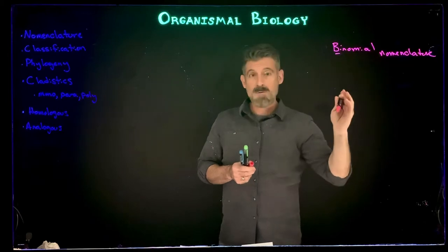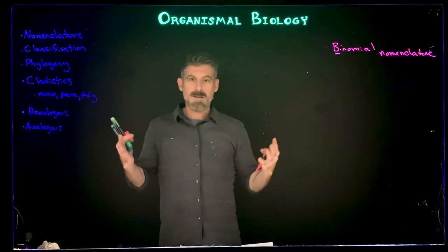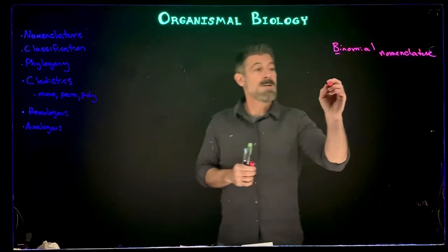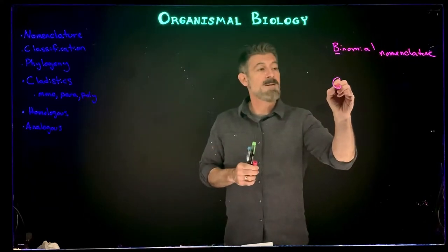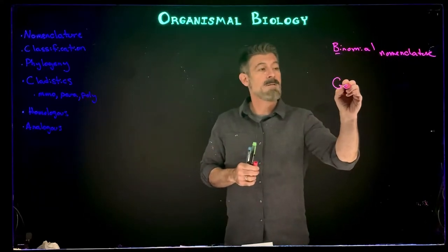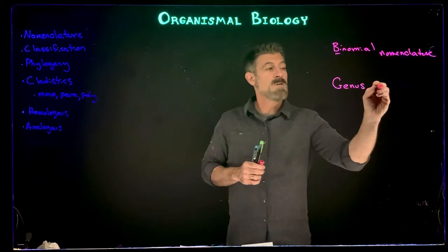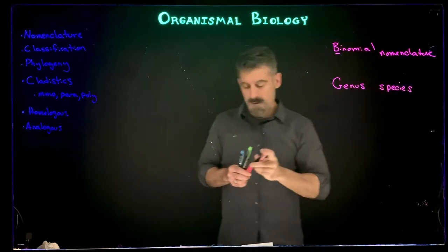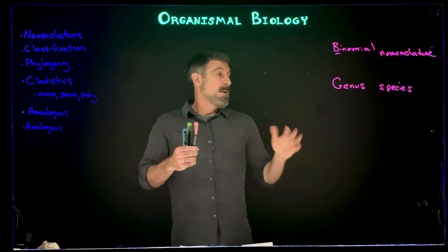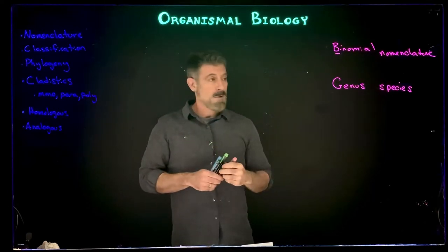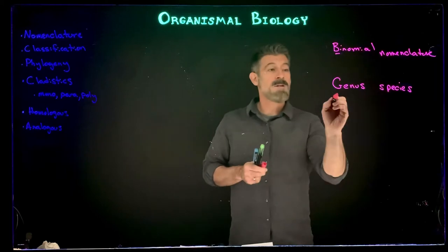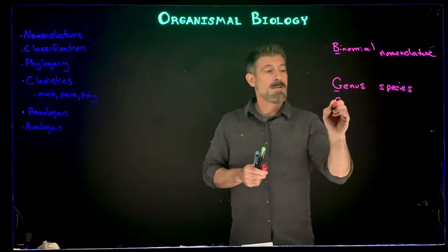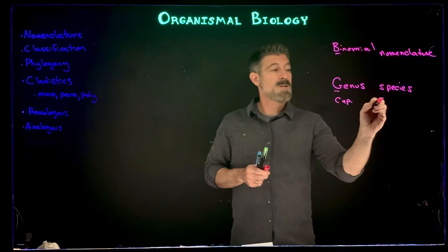Binomial — meaning two names — is the system used, and there are going to be many other parts of the classification system, but every organism is typically assigned a genus and a species. Certain rules become important: the genus must be capitalized and the species must be lowercase.